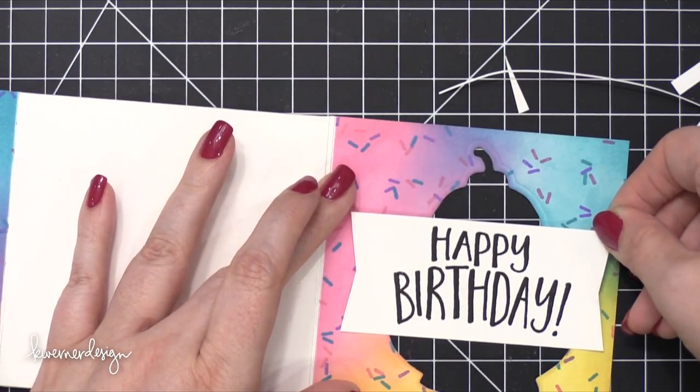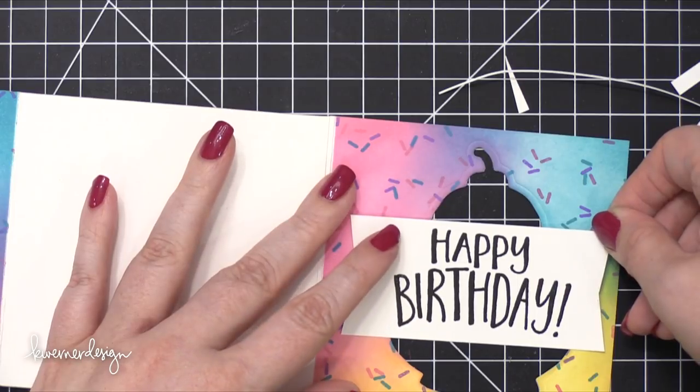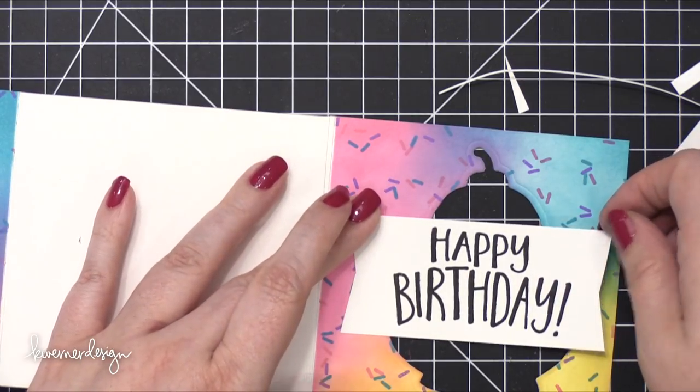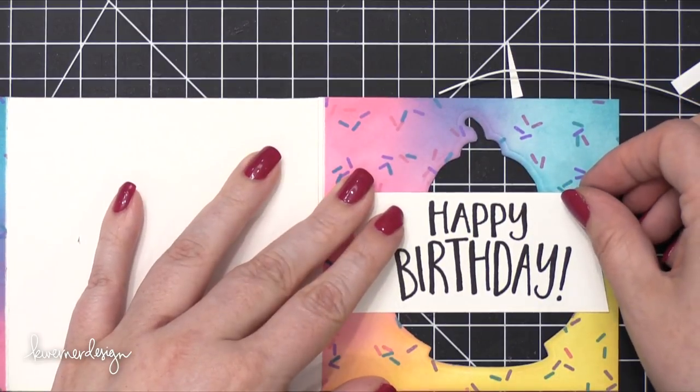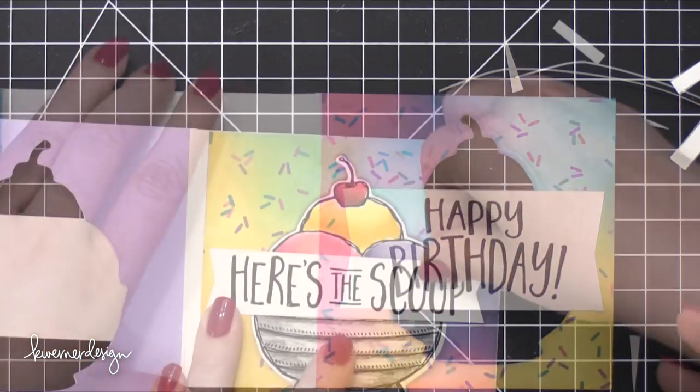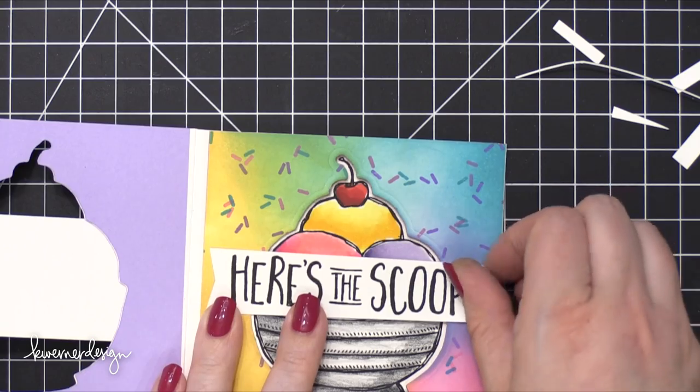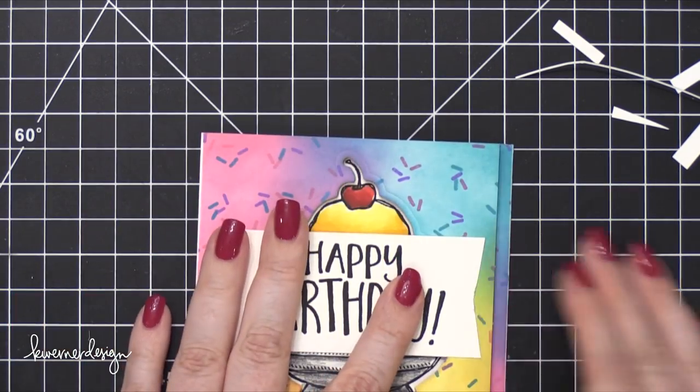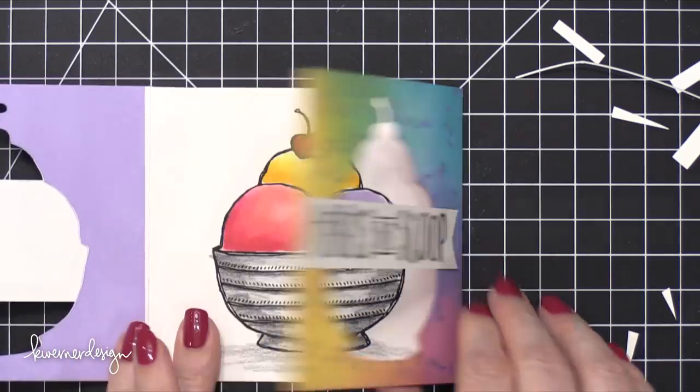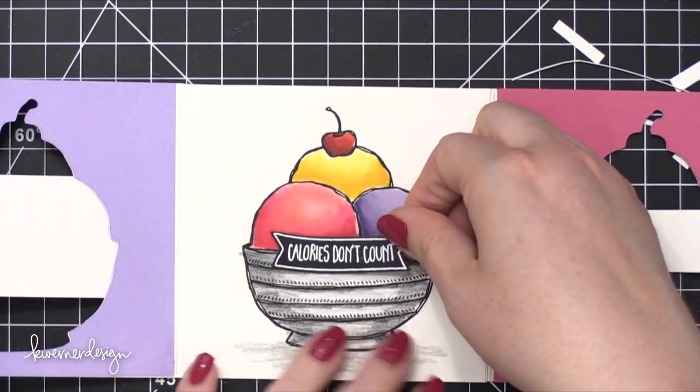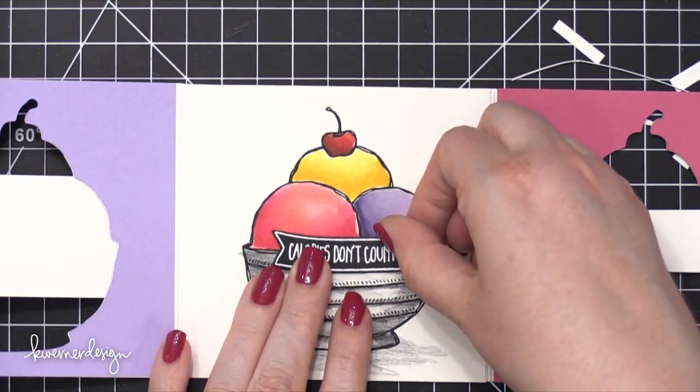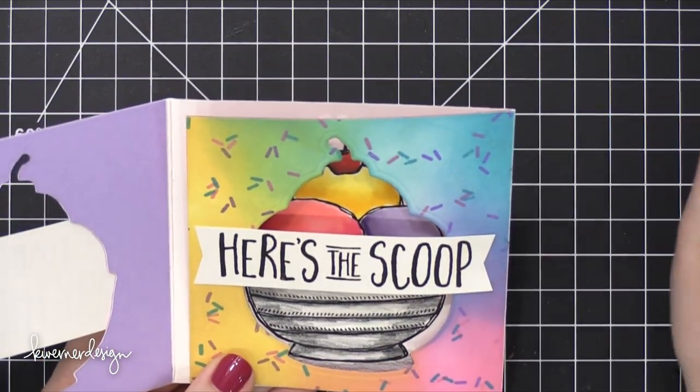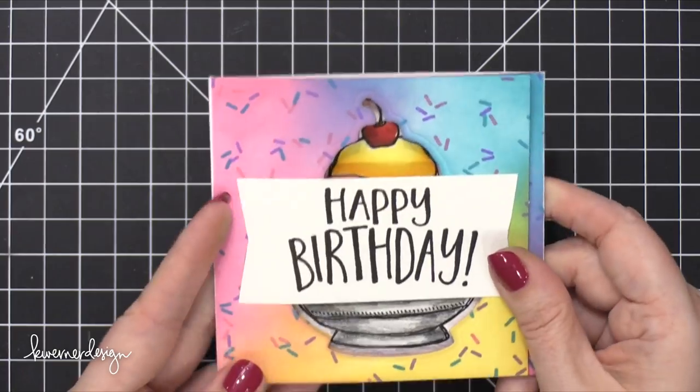I then took those greetings that I stamped earlier and I cut them into banner shapes. This is going to go over the first part of the card, this big happy birthday. Then I took the here's the scoop, which is a little bit smaller than the happy birthday, so you won't see it through the front of the card. Then I adhered the very last piece, which is the calories don't count little greeting right there. So that was kind of cute and how each one covers up the one below it. So that is the card for today.